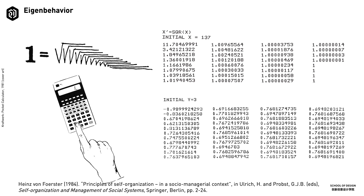Another example Heinz von Foerster used is mathematical: when an operation is performed repeatedly on an initial value on a pocket calculator, in some cases the solution also converges on a stable number. Here we have the square root of one, the square root of two, and the square root of three, converging on particular values.